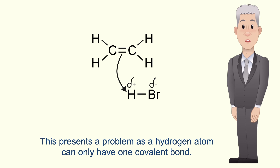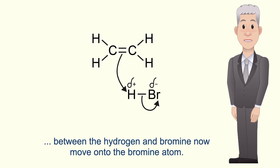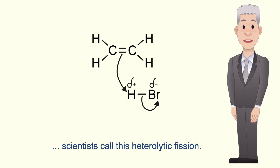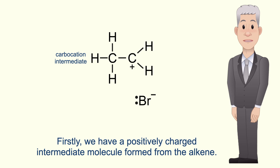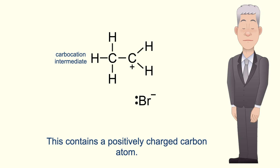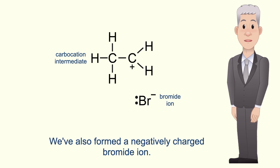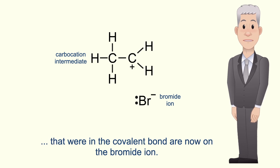This presents a problem, as a hydrogen atom can only have one covalent bond. So at the same time, the pair of electrons in the covalent bond between the hydrogen and bromine now move on to the bromine atom, and again we show this as a curly arrow. When a covalent bond breaks like this with both electrons going to one atom, scientists call this heterolytic fission. At the end of this stage we've got two products: a positively charged intermediate molecule formed from the alkene, called the carbocation intermediate, which contains a positively charged carbon atom. This atom is positively charged because it has lost its share of the electron pair that were in the pi bond. We've also formed a negatively charged bromide ion, because both of the electrons that were in the covalent bond are now on the bromide ion.